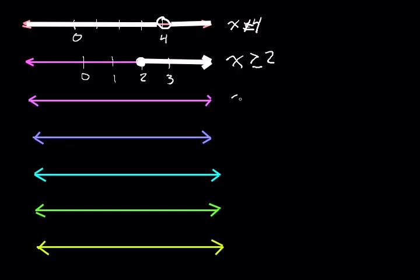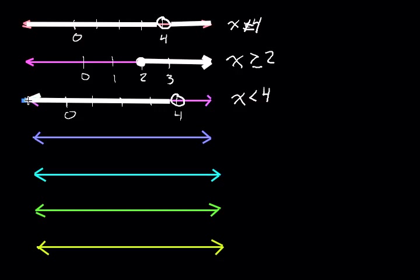How about something that's less than — say x is less than 4. Let's draw our number line with 0, 1, 2, 3, 4. Now there's no equal to sign here, so since 4 is not included, we're going to have an open circle at 4. Then we're going to shade to the left. Make sure that you're shading an arrow at the end, because this does go to negative infinity. So: open circle at 4, shade all values to the left where x is actually less than 4.